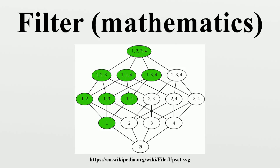Examples: Let S be a non-empty set and C a non-empty subset of S. Then {C} is a filter base. The filter it generates is called the principal filter generated by C. A filter is said to be a free filter if the intersection of all of its members is empty. A principal filter is not free. Since the intersection of any finite number of members of a filter is also a member, no filter on a finite set is free. A non-principal filter on an infinite set is not necessarily free. The Fréchet filter on an infinite set S is the set of all subsets of S that have finite complement. A filter on S is free if and only if it contains the Fréchet filter.